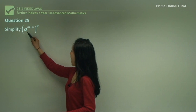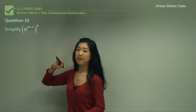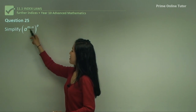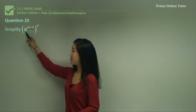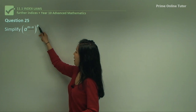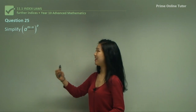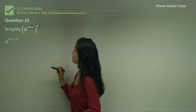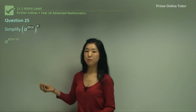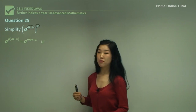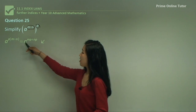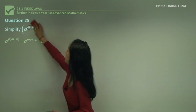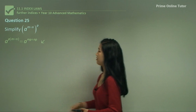Question twenty-five. We have a to the power of n plus n, and the whole thing is to the power of p. Don't be freaked out by having more than one term in a power. So we multiply this power p by this power n plus n. It simply becomes a to the power of p times (n plus n). Then expand the brackets to get a to the power of np plus np. Just apply the same rule.